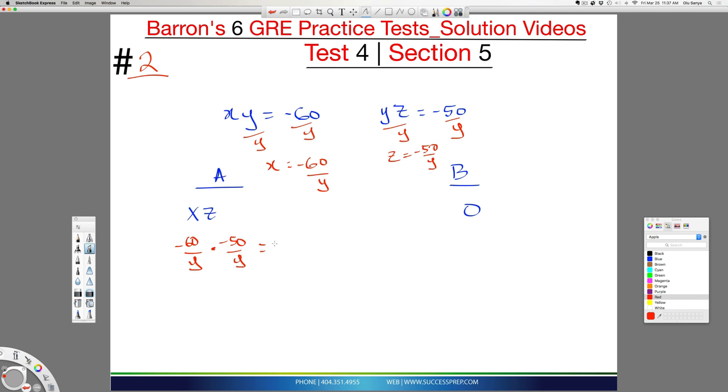Now, in multiplying these two, what we end up having, to be honest with you, is really just going to be a positive number. Because, check this out, if I multiply a negative and negative, I'm going to get a positive.